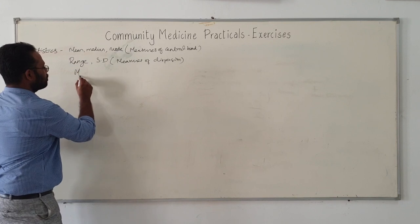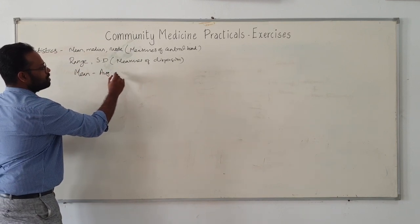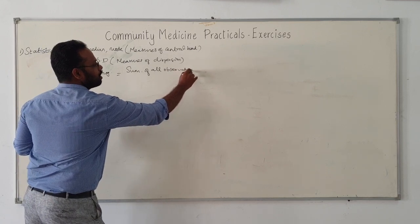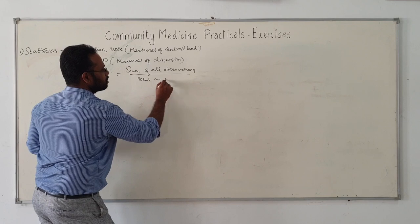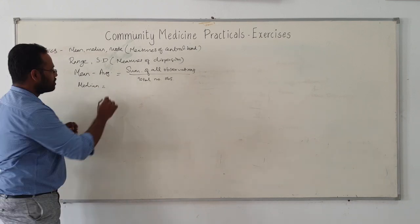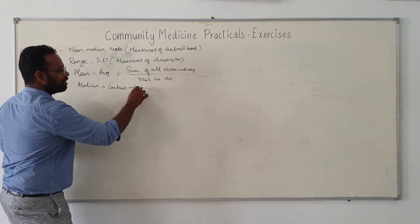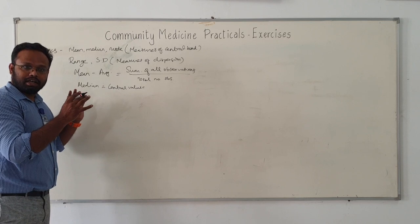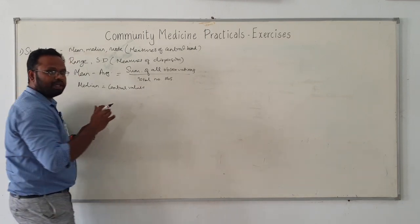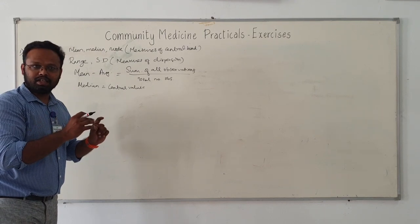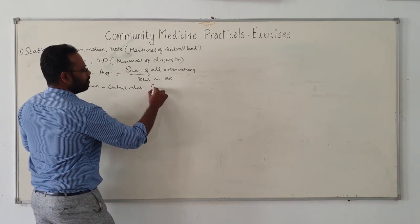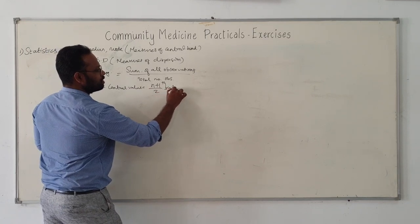Mean is the average, which equals the sum of all observations divided by the total number of observations. Median is the central value. You arrange all values in ascending or descending order, then find the middle value. If the total number of values is an odd number it is straightforward. The formula is: the (n+1)/2 th value is the median.